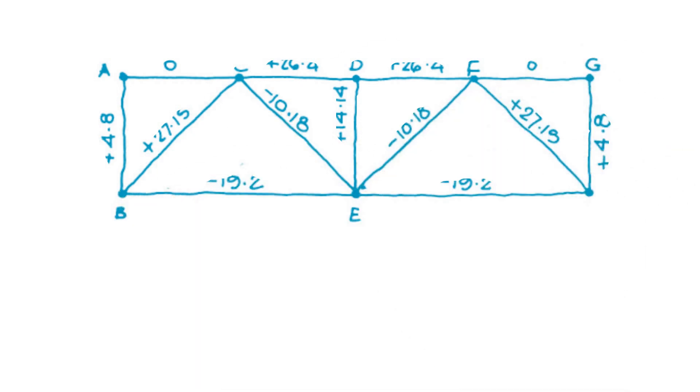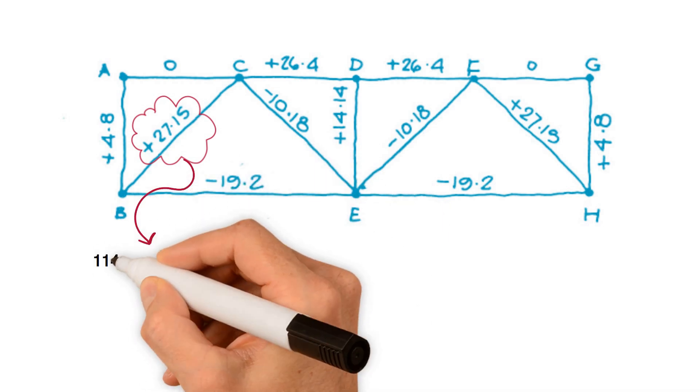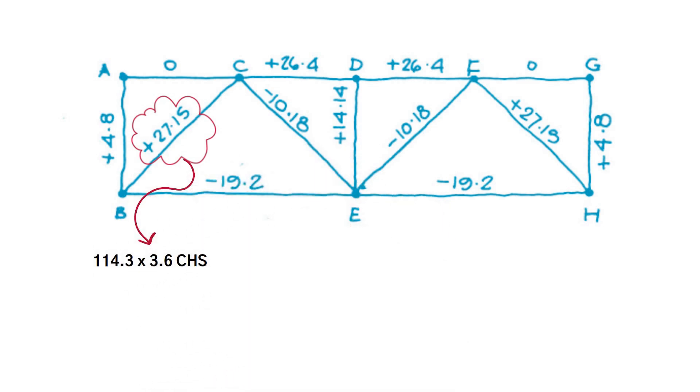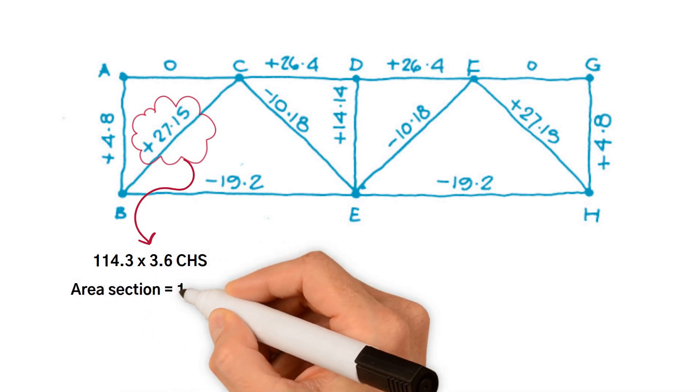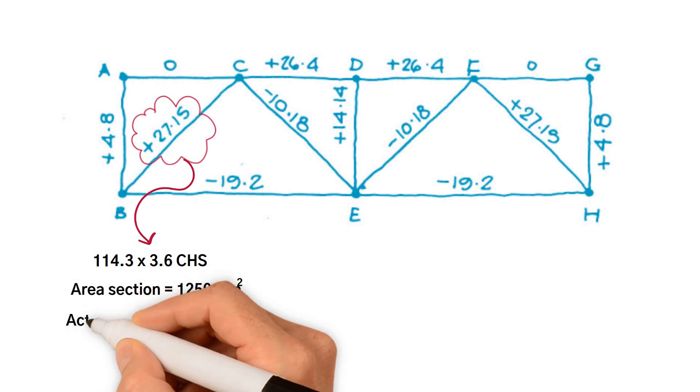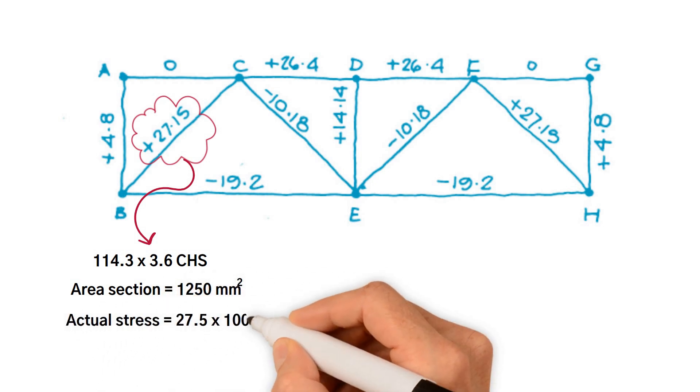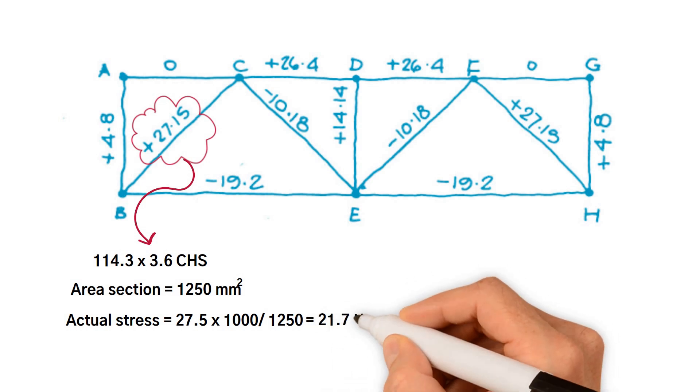The structural sections can now be chosen for the diagonal members. Circular hollow sections CHS are usual, and the actual stress calculated by actual force, which we have just worked out, divided by the member section area. For instance, for BC member, the force is 27.5 kilonewtons, and we choose 114.3 by 3.6 CHS section, which area equals 1250 millimeters squared. Hence the stress for the member BC is 27.5 kilonewtons divided by the area. We get 21.7 newton per millimeter squared. We use the same approach for the other members.